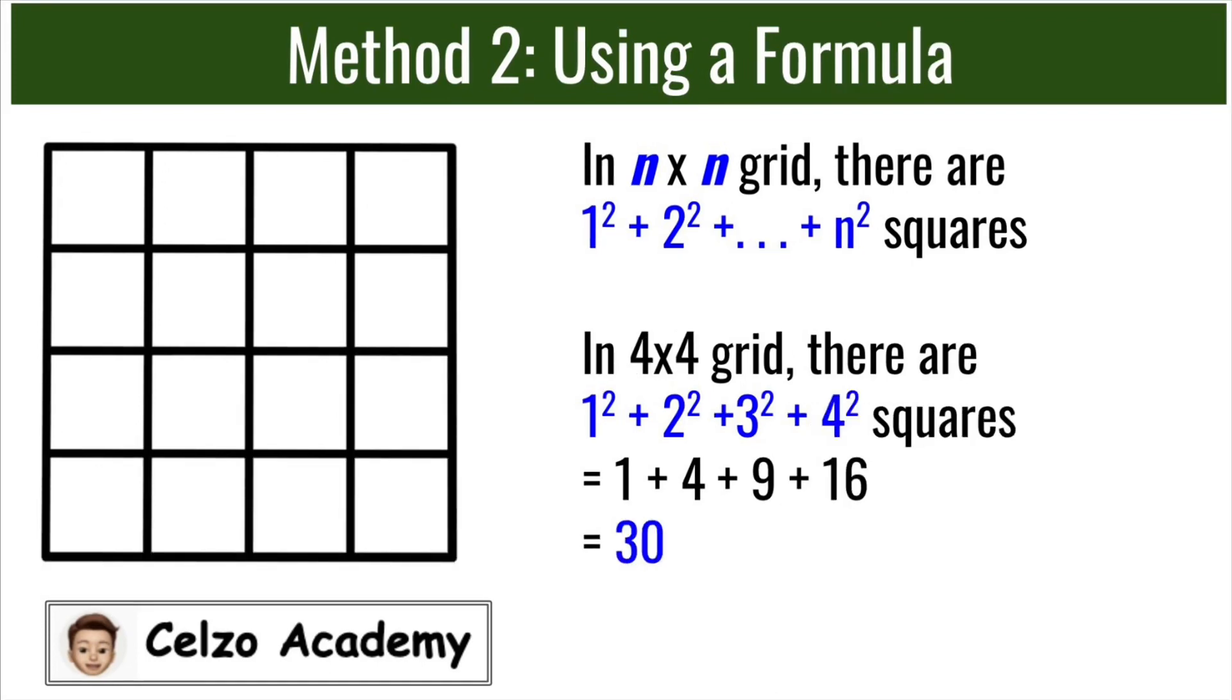If it's a 4x4 grid, there will be 1² + 2² + 3² + 4². And that is 1 + 4 + 9 + 16. So we have 30 squares total.